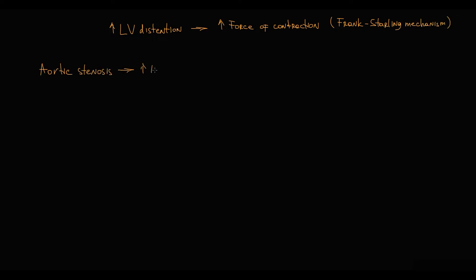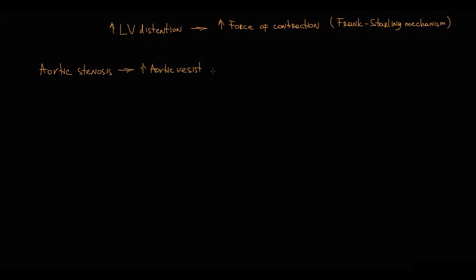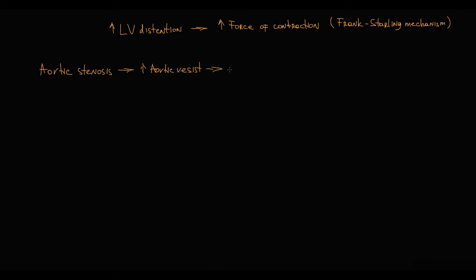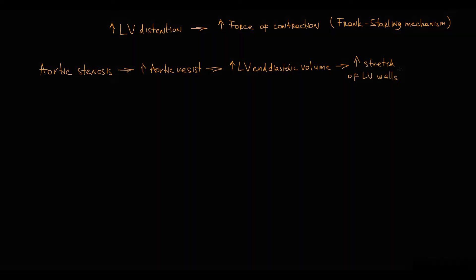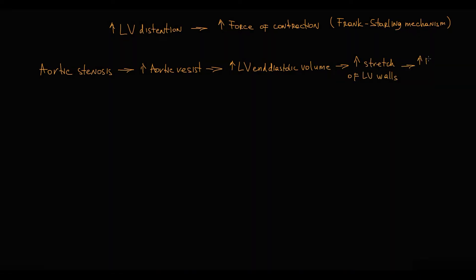Aortic stenosis causes an increase in aortic resistance. This causes a decrease in flow through the aortic valve, thereby increasing the amount of blood in the left ventricle — that is called left ventricular end-diastolic volume. This causes an increase in stretch of the left ventricular walls, and very rapidly this causes an increase in force of contraction. This is what we call the Frank-Starling mechanism.